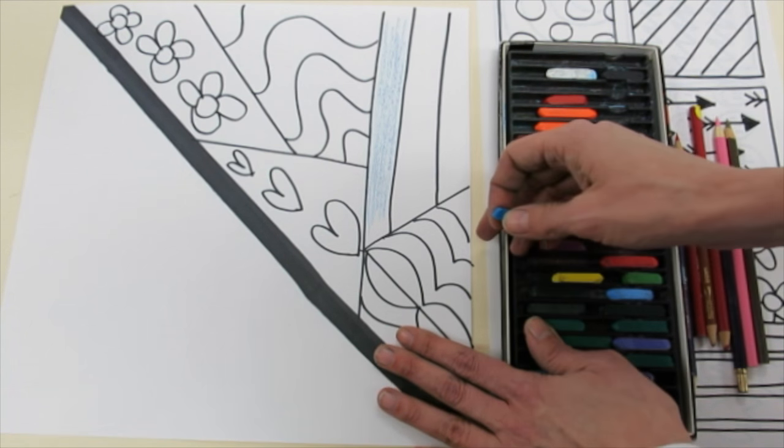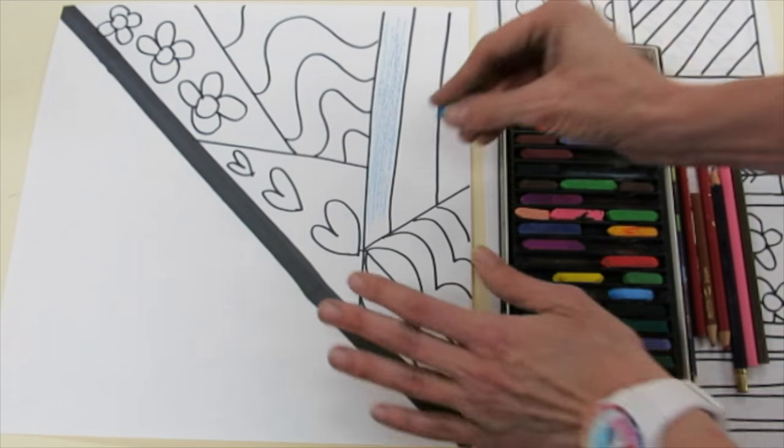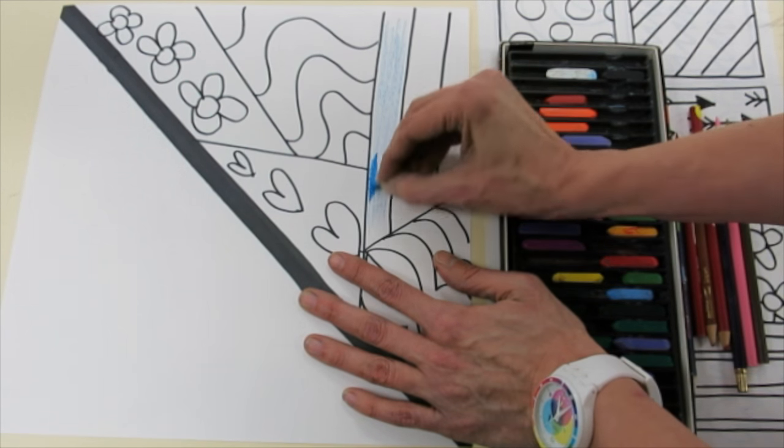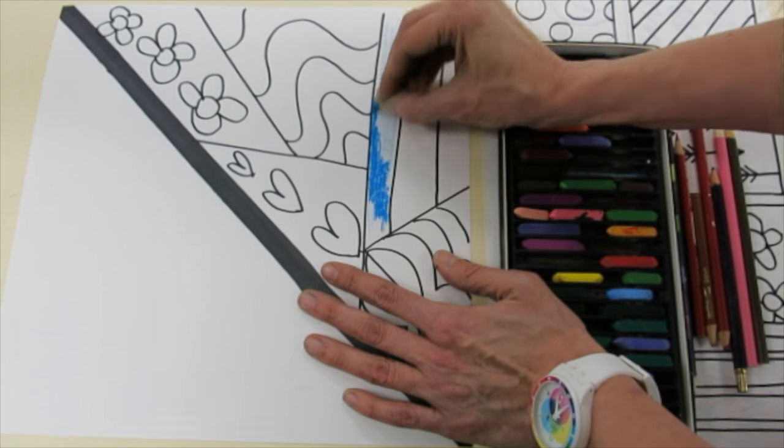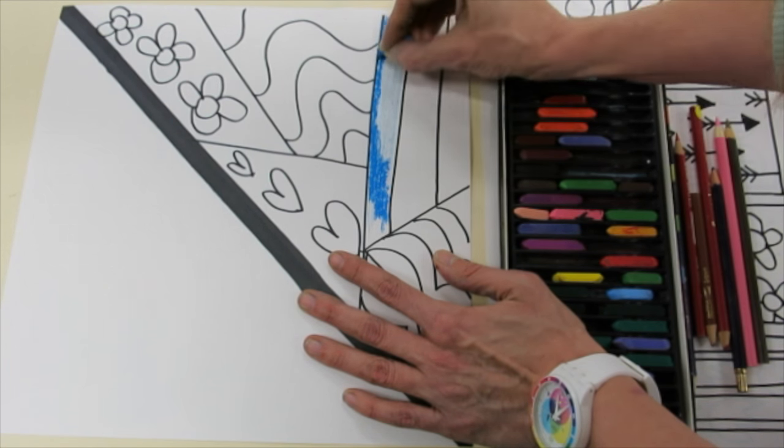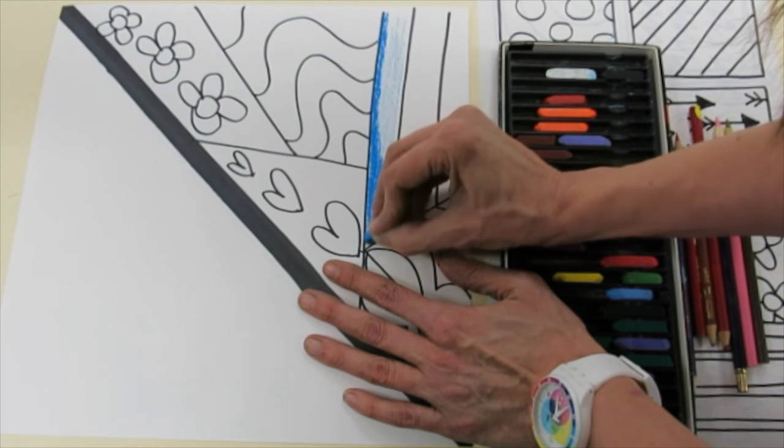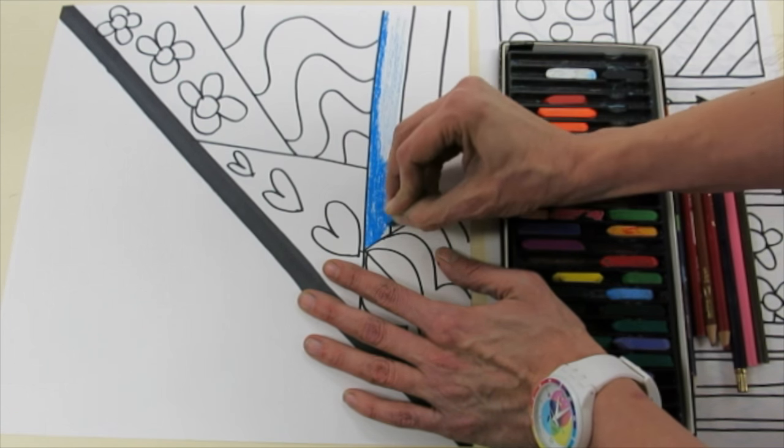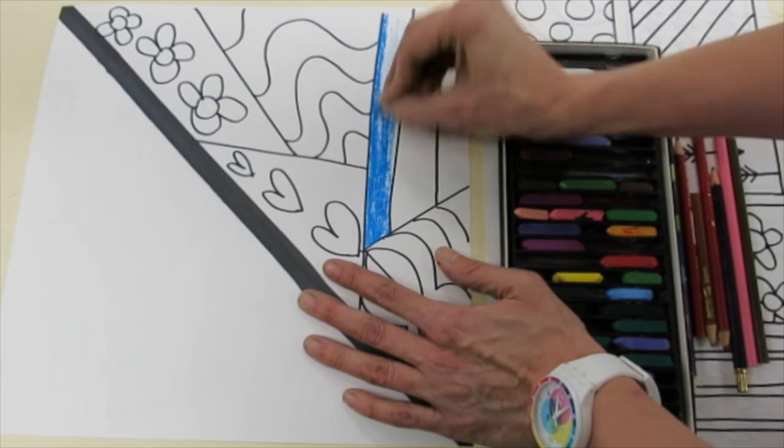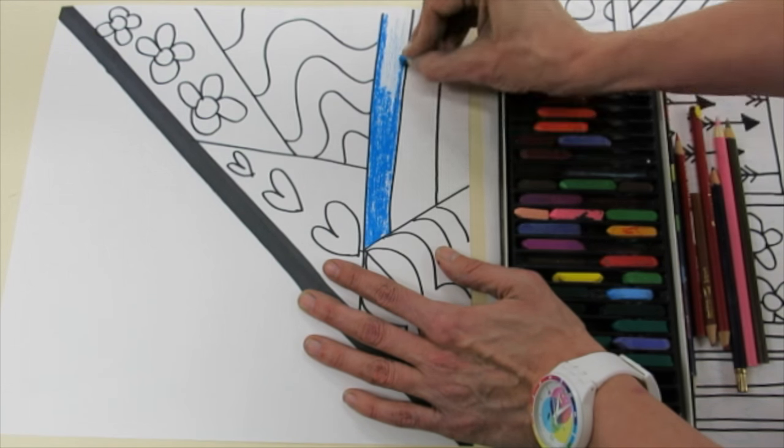We want our heart mural to be really nice and bright. So, I'm going to go back again and press really firmly. And what I like to do when I'm coloring is I color very slowly when I'm next to my black line because I'm trying not to go out of my lines. And then, I can speed up when I'm not anywhere near going out of my lines.